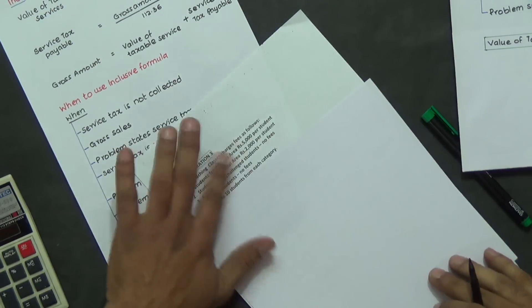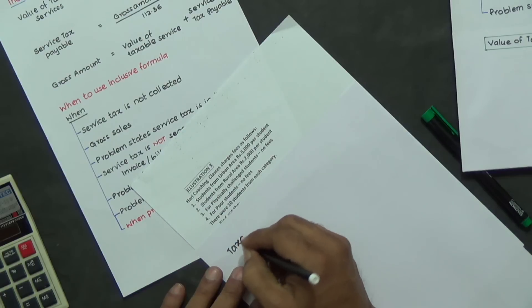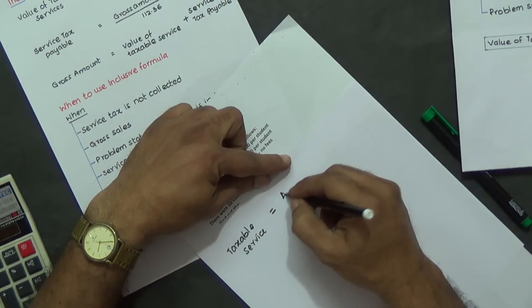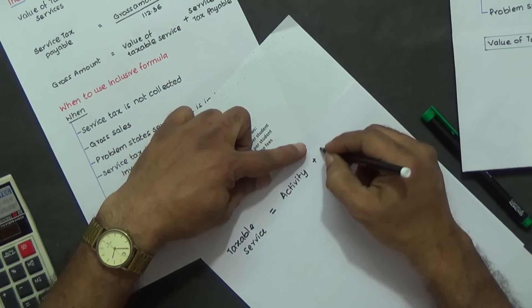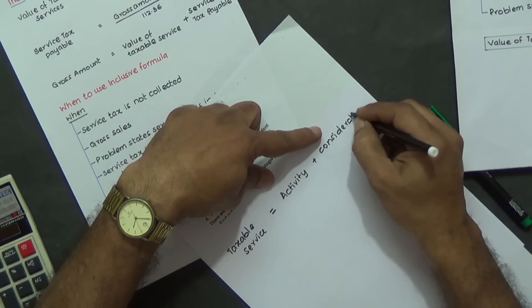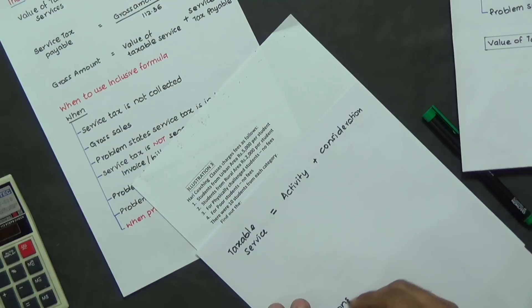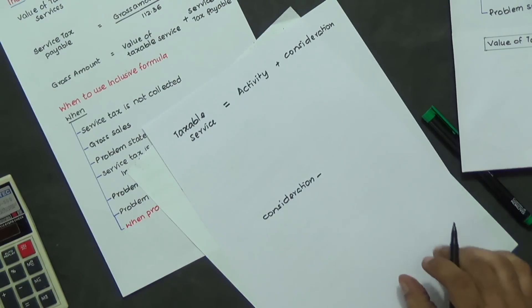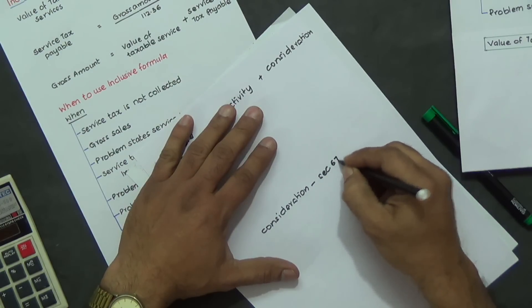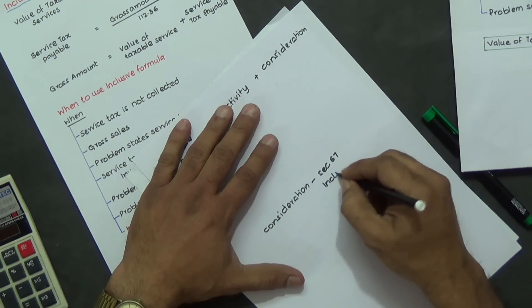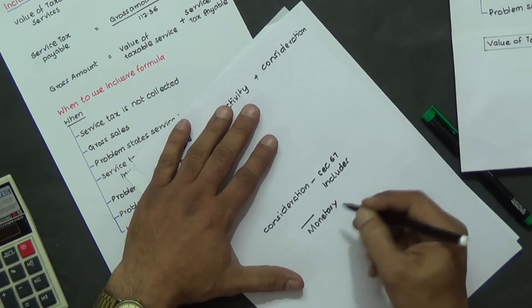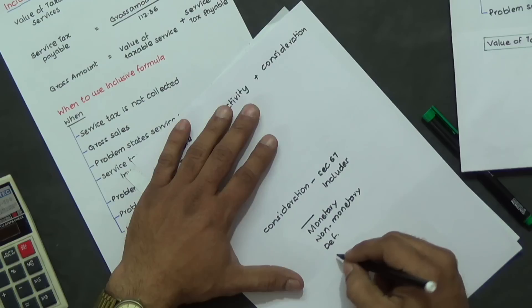Let me take a minute off from this problem and explain a few things to you. Taxable service means when it is matched with activity plus consideration. Consideration means the act does not define what is consideration, but section 67 states consideration includes in monetary terms, non-monetary consideration, deferred consideration, and exchanges.